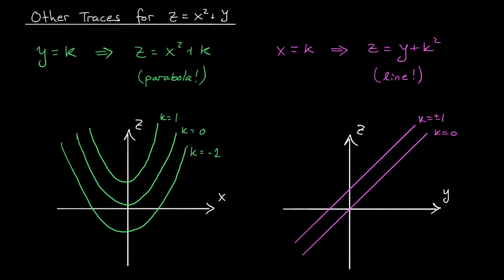Similarly, if we were to change k to plus or minus 2, that line is going to shift up by 4 units. So we get the line z equals y plus 4.